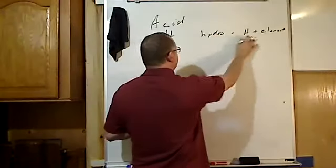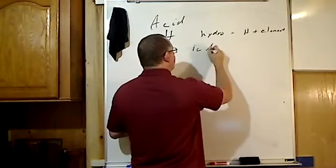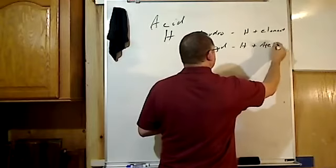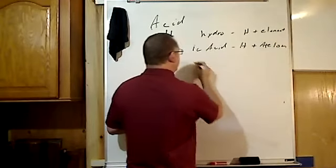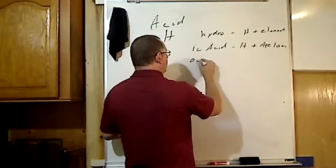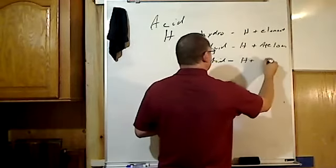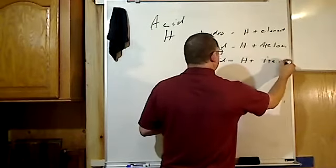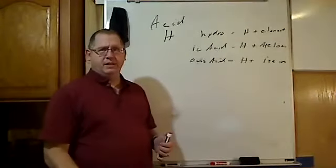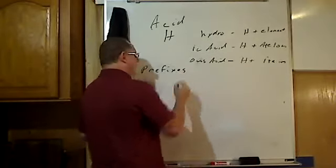If there's no hydro, we look for -ic acid, and that's H plus the -ate ion. If it's -ous, it's H plus the -ite ion.